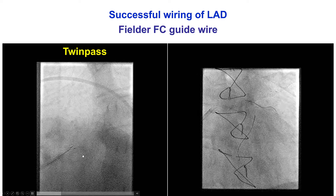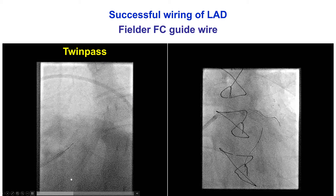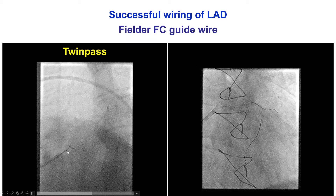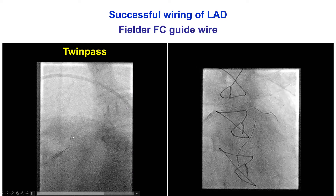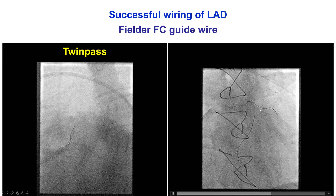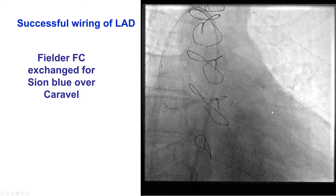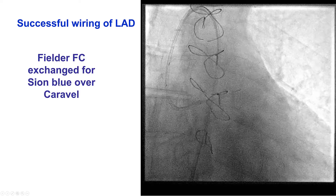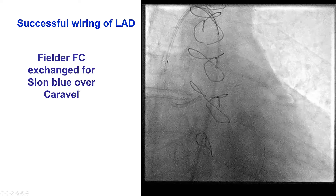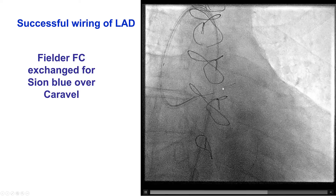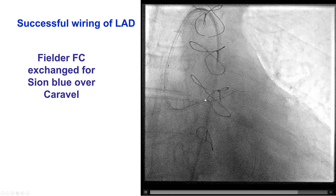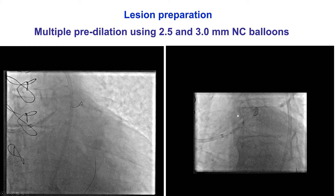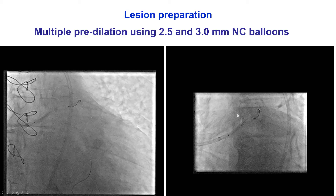Eventually, using the Fielder FC wire and the TwinPass, we were able to advance the Fielder FC guide wire into the LAD and then switch it for a soft workhorse C-on blue guide wire over the Caraval microcatheter. We finally had wiring of both the LAD as well as the circumflex, and were now able to start our intervention.